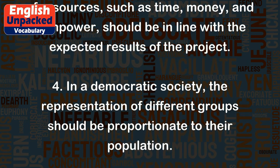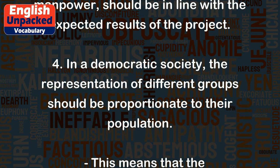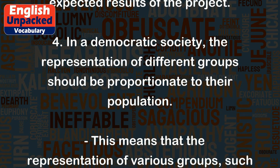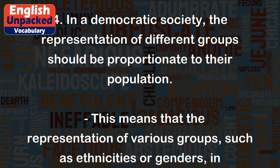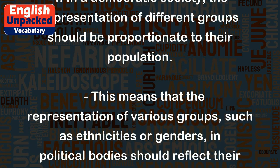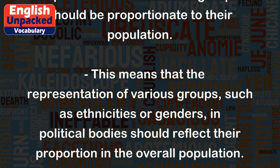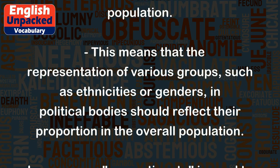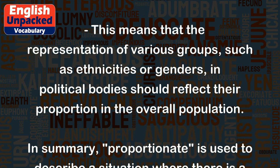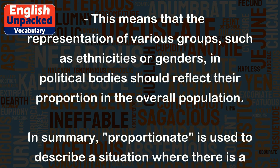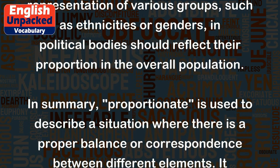Four: in a democratic society, the representation of different groups should be proportionate to their population. This means that the representation of various groups, such as ethnicities or genders, in political bodies should reflect their proportion in the overall population.